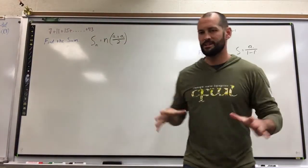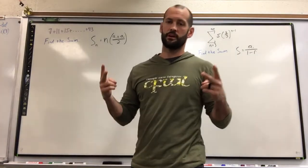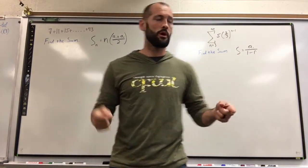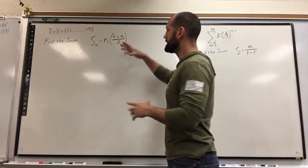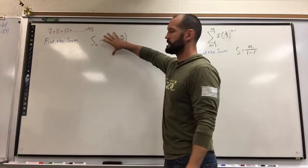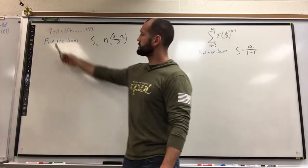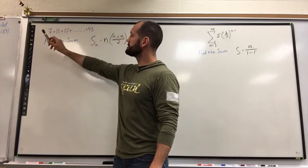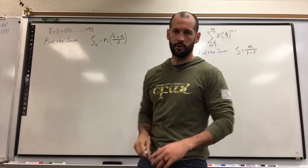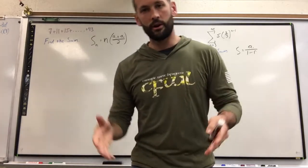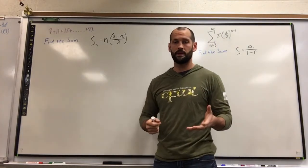We're talking more about geometric and arithmetic series, and we've got two types of problems that we've had a request for. One, the geometric series that is infinite, and two, how do you get the sum of an arithmetic if there's limited information? So let's look at the first one. They give us a wonderful pattern: 7 plus 11 plus 15 plus dot dot dot plus 43. We don't know how many numbers are in between that dot dot dot, which is going to create a problem.